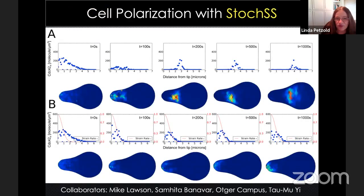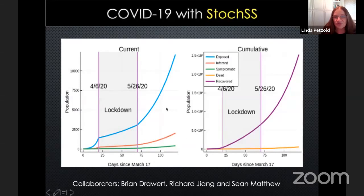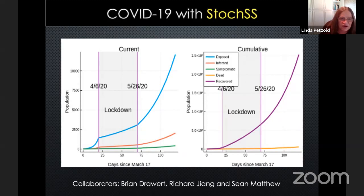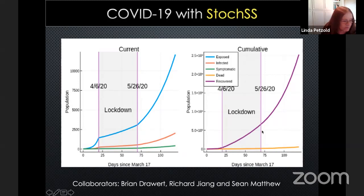These are pictures of a yeast cell polarizing towards its partner to mate. We're also modeling COVID-19 — it's really easy to do in StochSS — and in fact these plots are being done in StochKit 2 for Julia. These are population graphs from populations in Orange County, a big county in California, showing the lockdown time starting in March and then the end of the lockdown.